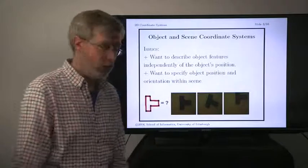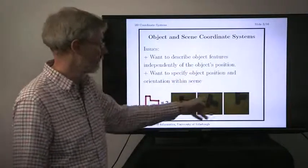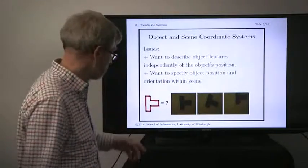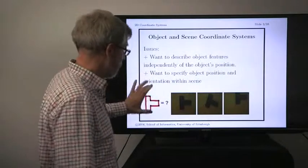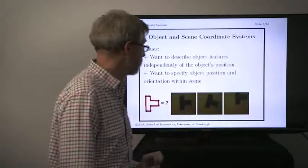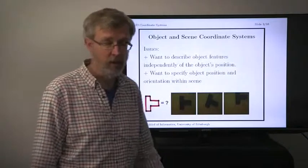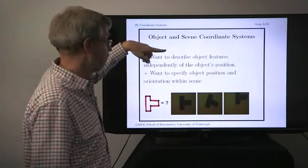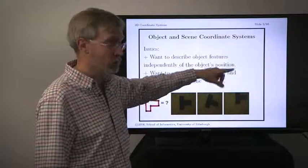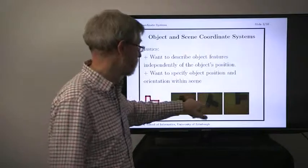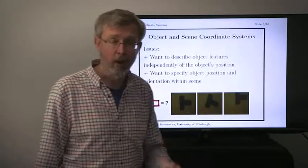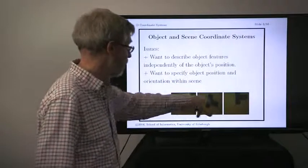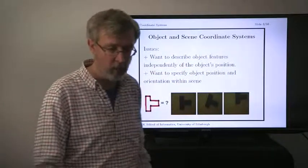We're going to end up trying to recognize some objects in different places in the image. When we want to recognize them, we're going to need to have some kind of a model of the object — a way of describing objects. We're going to want to describe those objects in a way that's independent of the object's position in the image, so we don't want a different description for each image. We're also going to want a way of talking about where this object is inside these images. That's what all the coordinate system stuff is going to be about — putting all those pieces together.